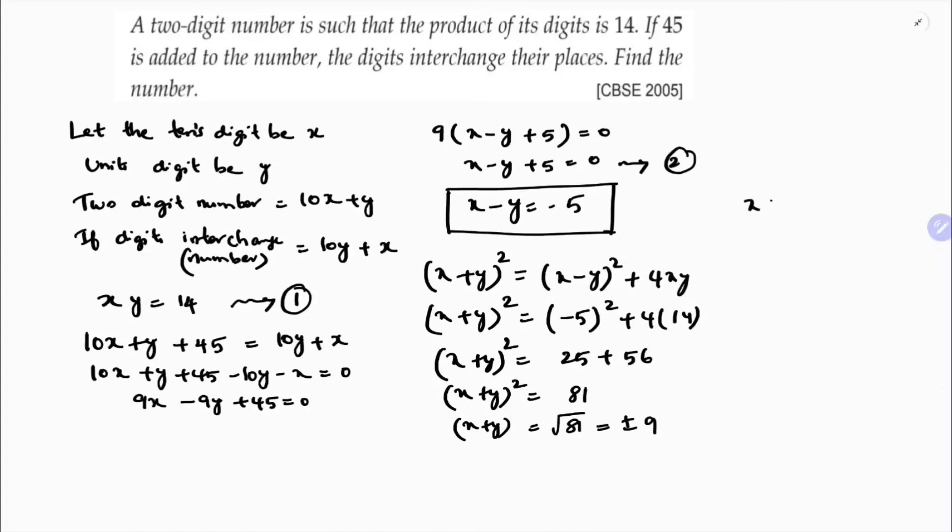Now one equation is x plus y equals plus 9. The other one is x minus y equals minus 5. If I eliminate here, y and y cancel. So 2x equals 4, x equals 2. If x is 2, I can substitute in the other equation. xy equals 14, if x is 2, 2y is 14. So y is 14 by 2 which is 7.